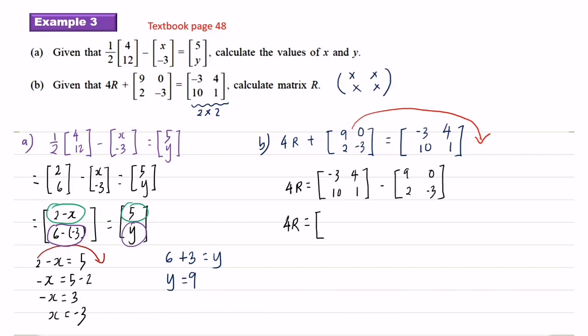R equals, you do the subtraction of these two matrices. Negative 3 minus 9 equals negative 12, 4 minus 0 equals 4, 10 minus 2 is 8, 1 minus negative 3 equals 4. Move over 4 to opposite side. Okay, so this one, 4 when you move over it will become 1 over 4. R equals 1 over 4 times negative 12, 4, 8, 4.